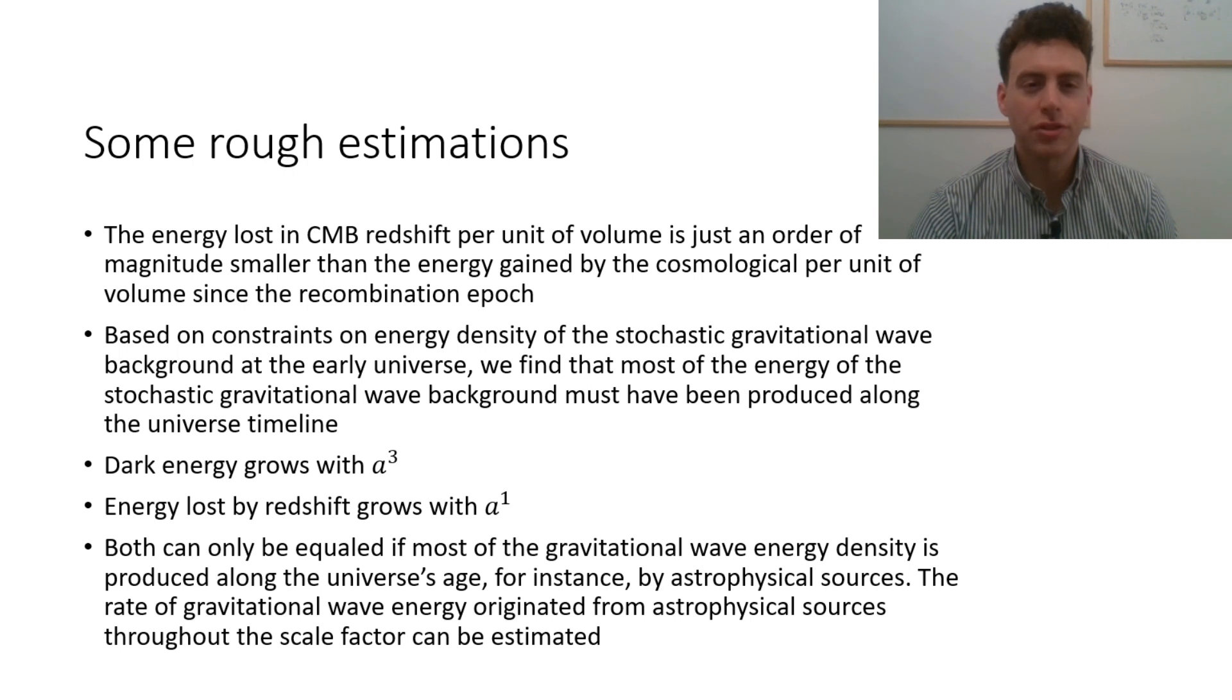Based on constraints on energy density of the stochastic gravitational wave background at the early universe, we find that most of the energy of the stochastic gravitational wave background must have been produced along the universe timeline. This is due to the fact that while dark energy grows with the third power of the scale factor, energy lost by redshift grows with the first power of the scale factor. Both can only be equaled if most of the gravitational wave energy density is produced along the universe's age, for instance by astrophysical sources.